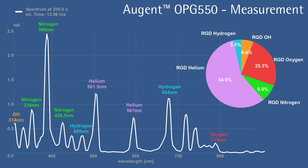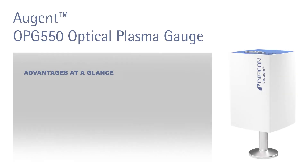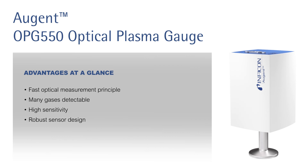The AUGENT OPG550 is used for fast chamber leak testing, real-time gas monitoring, endpoint detection, and other processes. It enables an increase in process quality and yield through better process control.